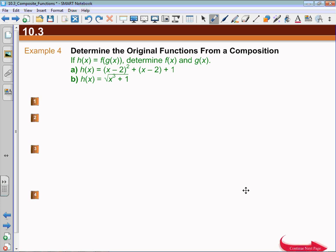A lot of students, I think, don't really know, but if I identify—I'm just going to rewrite it—that h of x is x minus 2 squared plus x minus 2 plus 1. I think it's important to see that x minus 2 is substituted into two locations.